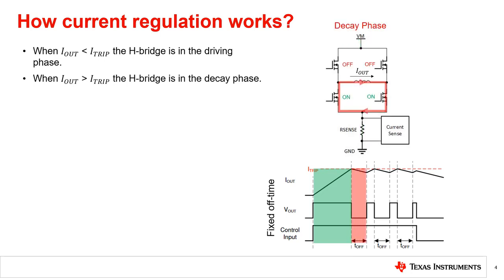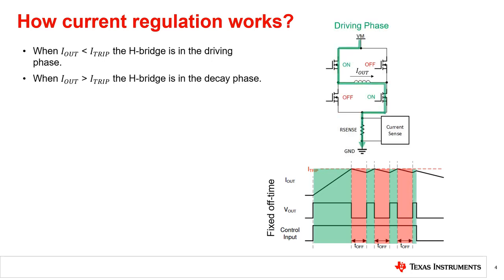Once the output current reaches the ITRIP limit, the driver will set the H-bridge to a decay phase. During the decay phase, the winding current recirculates between the motor winding and the bottom two FETs. Note that this example uses a low-side sensing topology, so no current flows through the sense resistor, making current sensing not possible during this period. The decay phase is highlighted in red on the waveform. The H-bridge will be in the decay phase for a fixed period of time, labeled T-off on the waveform.